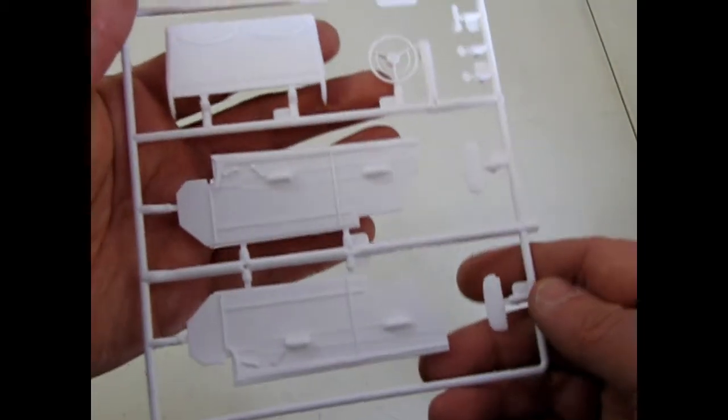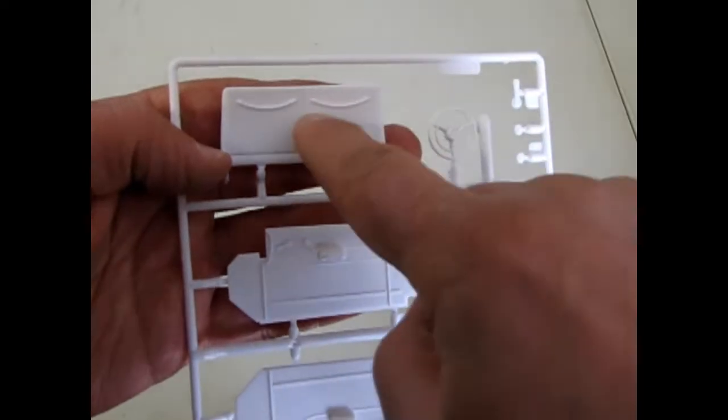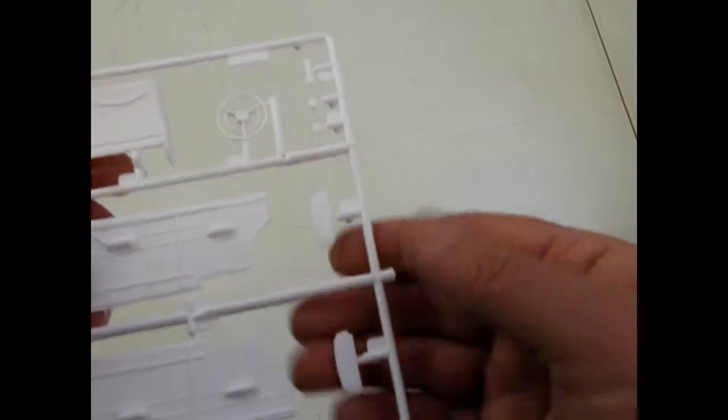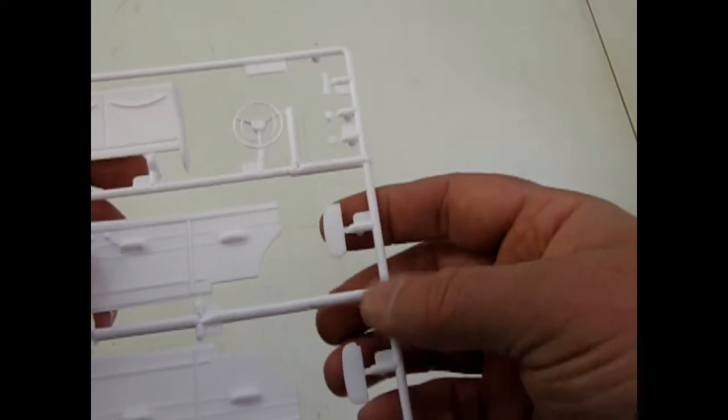Here's our upholstery. And they give you the little ropes that hang off the back of the seats, as well as the steering wheel and the pedals. And there are your sun visors.